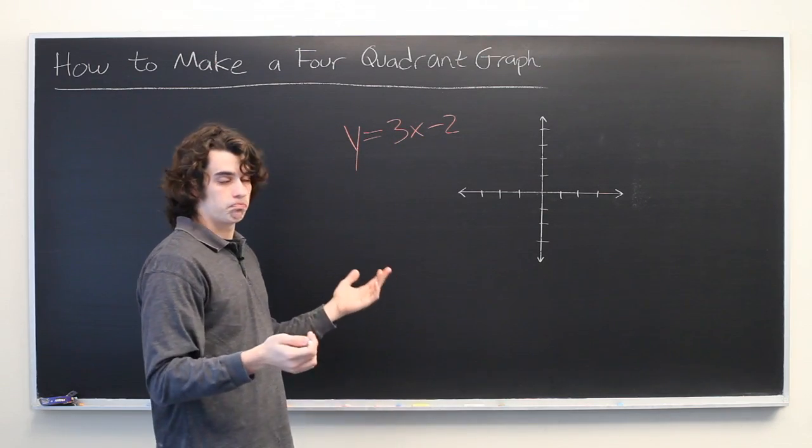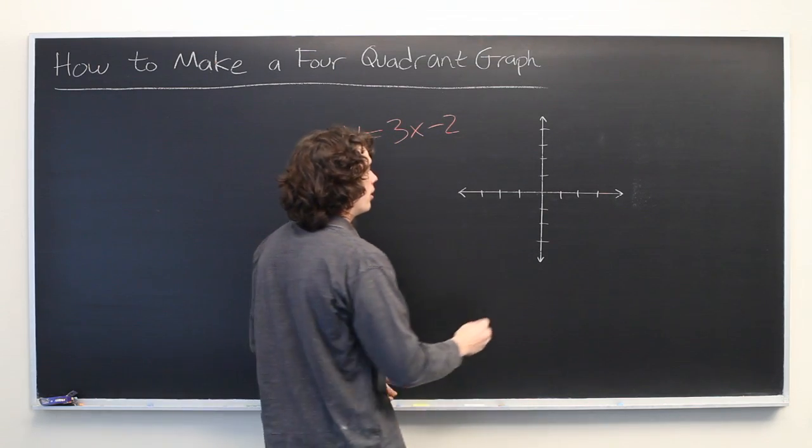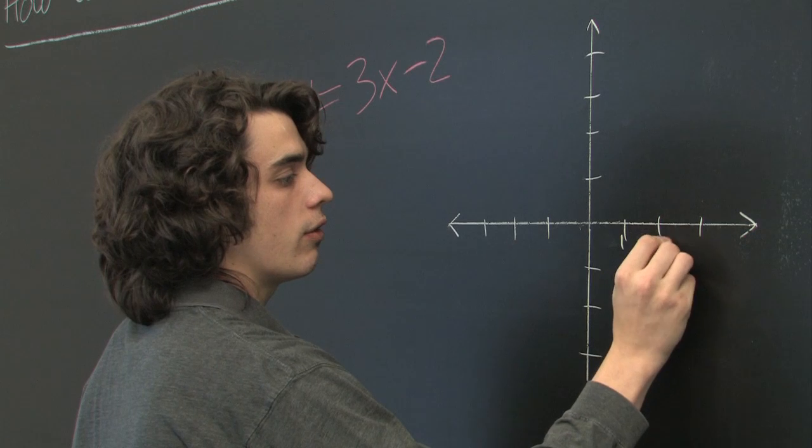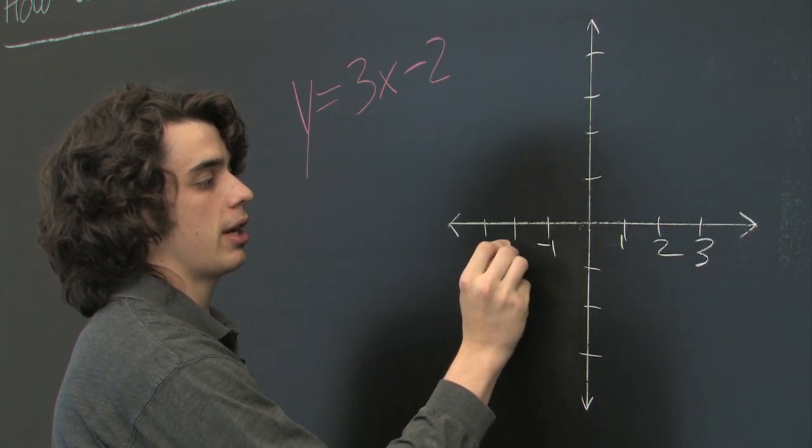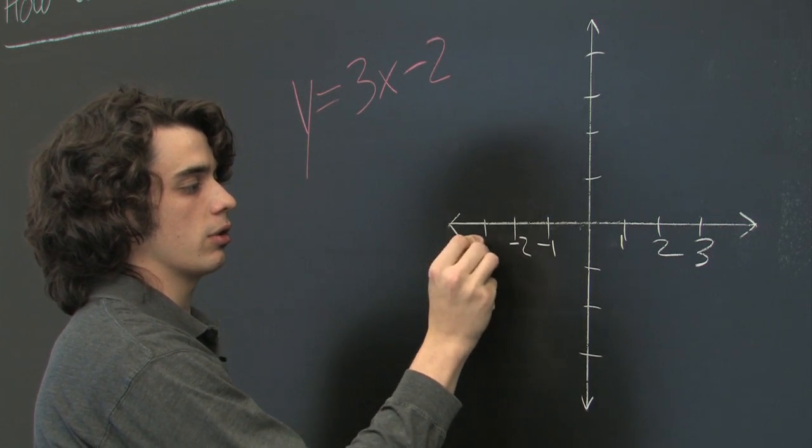And if you keep that in mind, it's fairly simple. You can make it even easier if you go ahead and label all of your tick marks based on whether they're positive or negative, just so you don't get confused later on.